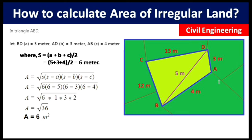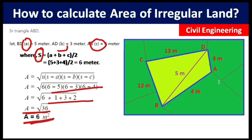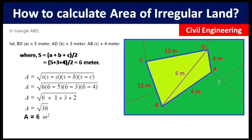Using Heron's formula: A = √(s·(s−a)·(s−b)·(s−c)). Putting in all values and calculating, we get A = √36 = 6 square meters. Let's call this Area 1 — the area of triangle ABD.